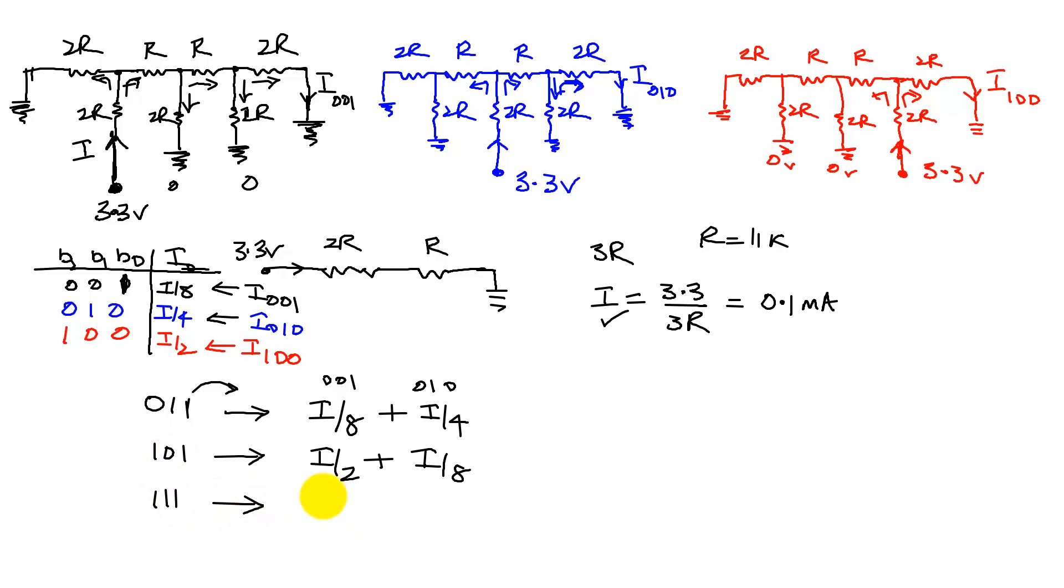And lastly, 111 is going to be simply I over 8 plus I over 4 plus I over 2.